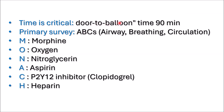We aim to achieve a door-to-balloon time of 90 minutes for patients who need percutaneous coronary intervention, or PCI. Regarding the primary survey, ABC stands for airway, breathing, and circulation. It is important to assess and stabilize the patient's basic life functions before proceeding with any further treatments.